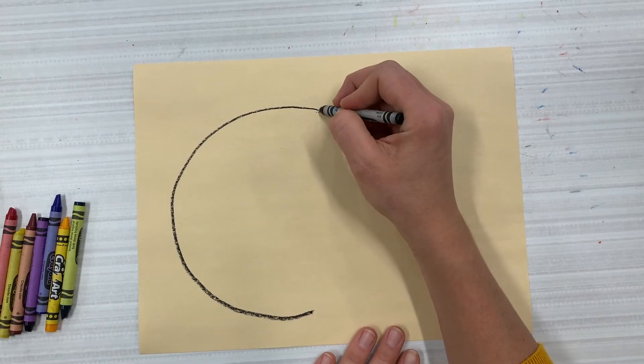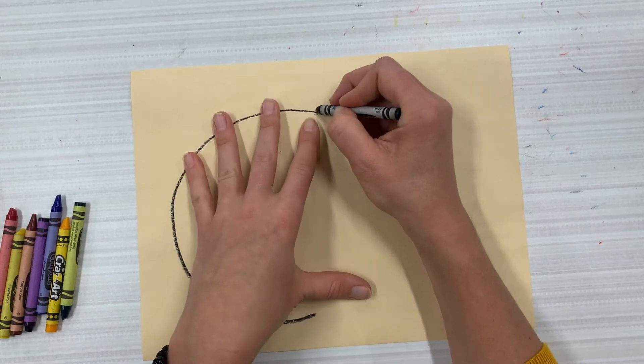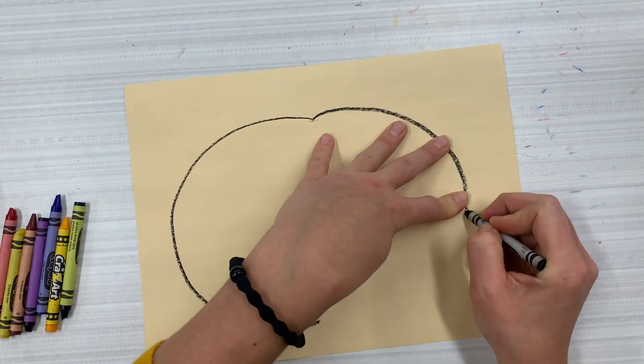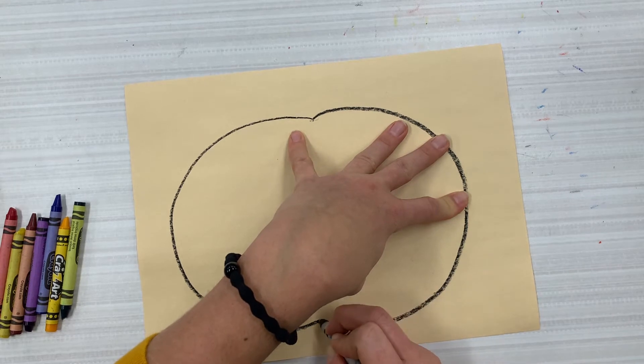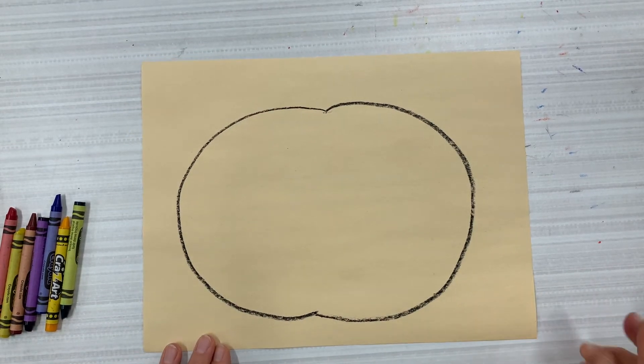Now I'm going to go to the top where I started my line and I'm going to draw a curved line that goes the other way, and then I have my pumpkin.